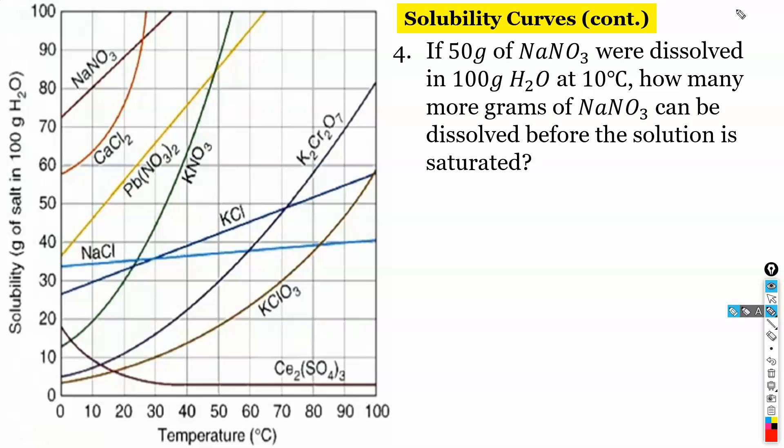Let's look at 10 degrees Celsius. NaNO3. So we'll follow this up to our curve right here. So we know that we can put 80 in.